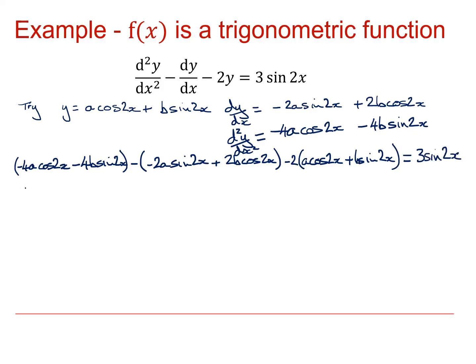So if I look at coefficients for cos x, for cos x I'm going to get a minus 4a from here. I'm going to get a minus 2b from the second bracket. And then I'm going to get a minus 2a from the final bracket, minus 2a. And that's got to be equal to 0. So in other words, I've got minus 6a minus 2b is equal to 0.